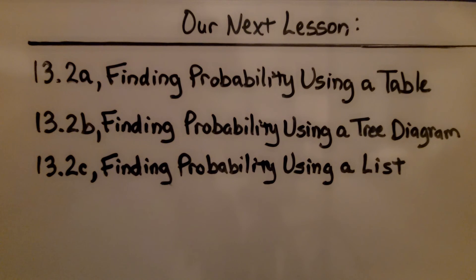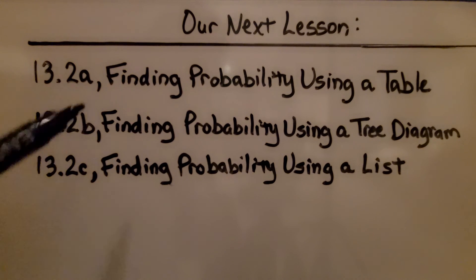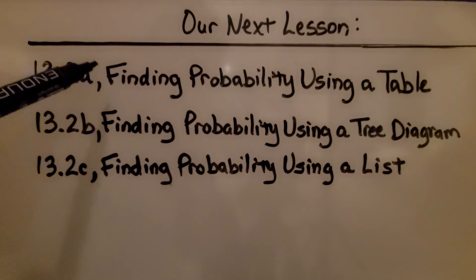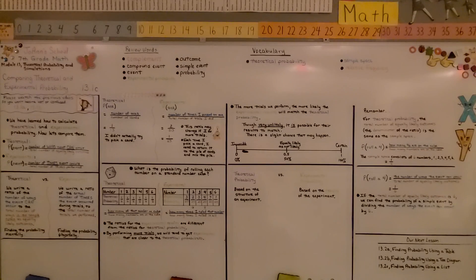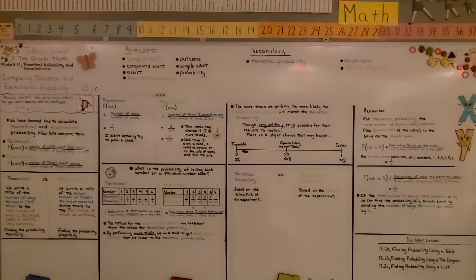We're finished with Lesson 13.1. We're going to be moving on to 13.2, where we'll start talking about finding probability using a table. I hope you now understand the difference between theoretical and experimental probability. If I was able to help you, hit that like button, and join me for the next lesson. Bye!